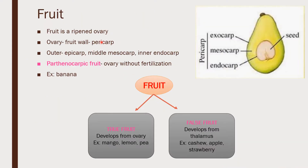Next is the fruit. Fruit means it is a ripened ovary. After fertilization, the ovary turns into fruit. The ovary is covered by a fruit wall called pericarp, which has three layers: exocarp (also called epicarp), mesocarp, and endocarp. There is a special kind of fruit called parthenocarpic fruit — the ovary forms a fruit without fertilization.